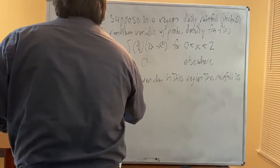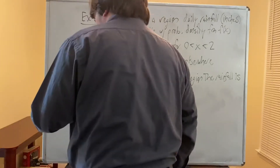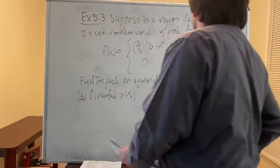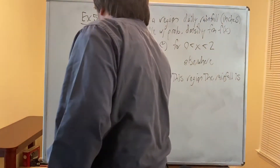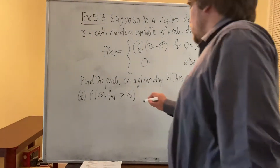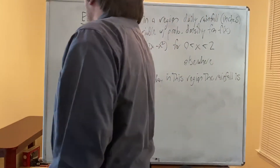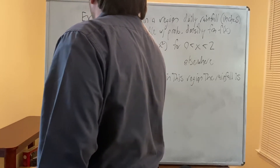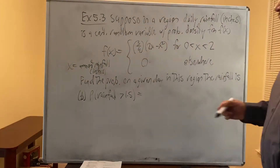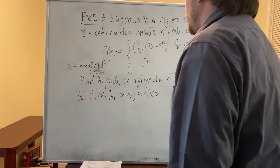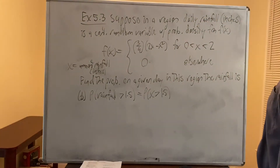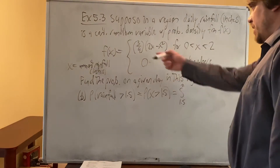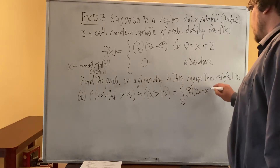Part B: find the probability that the rainfall is greater than 1.5 inches. Let X be the amount of rainfall in inches. The probability X > 1.5 equals the integral from 1.5 to 2 of f(x) dx, which is (3/4) ∫ from 1.5 to 2 of (2x - x²) dx.